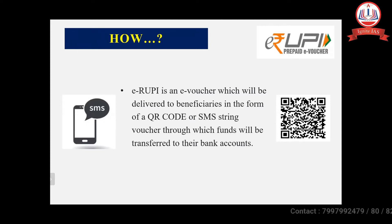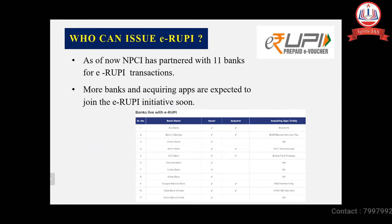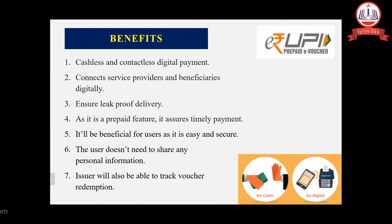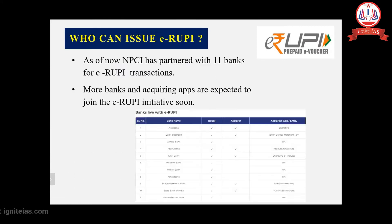Who can issue these e-vouchers? Any government agency or company can produce these vouchers through their partner banks. Currently, NPCI has partnered with 11 banks, including Axis Bank, Bank of Baroda, Canara Bank, HDFC, and others. Let us now discuss some benefits of E-Rupee.